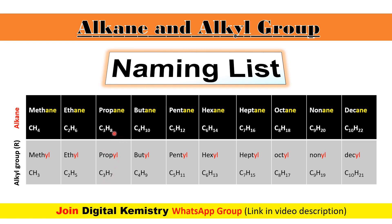One hydrogen less hai as compared to propane. Next hai butane, jise C4H10 se represent kiya jata hai, aur one hydrogen ko remove karne par butyl ki formation hoti hai. Isi tarah hexane se ek hydrogen remove karne par hexyl, heptane se heptyl, and so on. Isi tarah alkanes se jaise hi one hydrogen ko remove kiya jata hai, toh iske result mein easily alkyl group ki formation ho jati hai.